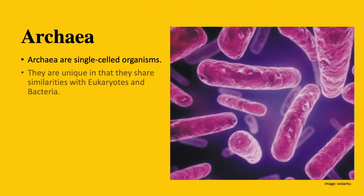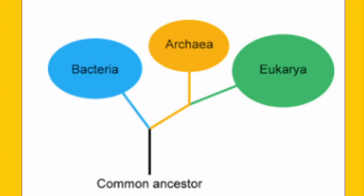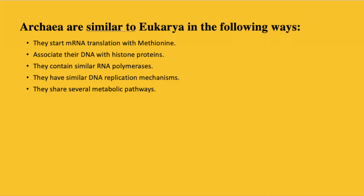Archaea. Archaea are single-celled organisms. They are unique because they share similarities with eukaryotes and bacteria. This makes sense when you look at how each domain developed from the common ancestor. Archaea are similar to eukaryotes in the following ways: they start mRNA translation with methionine, associate their DNA with histone proteins, contain similar RNA polymerases, have similar DNA replication mechanisms, and share several metabolic pathways.